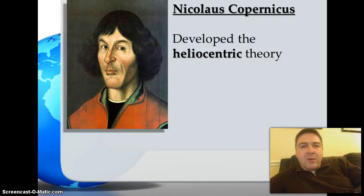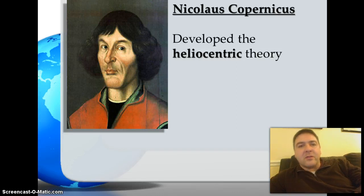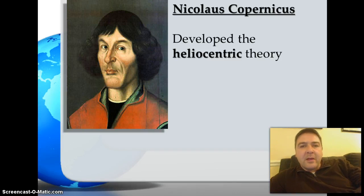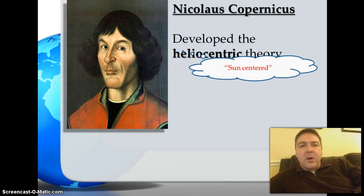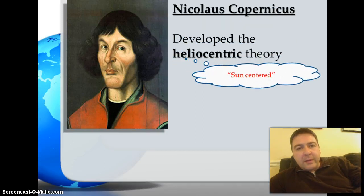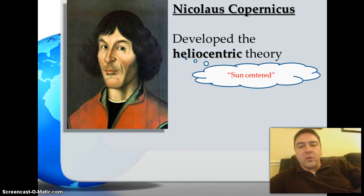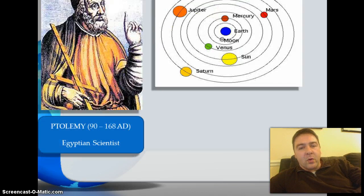Astronomers are scientists who study outer space. In his study of outer space, Copernicus developed the heliocentric theory. Helio comes from the Greek word helios for sun, so heliocentric refers to a sun-centered model of the solar system.